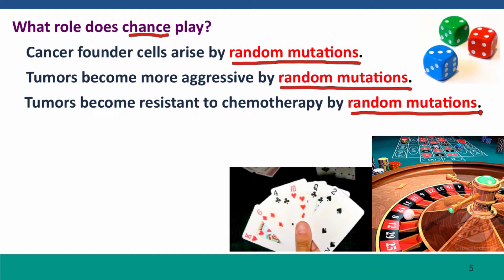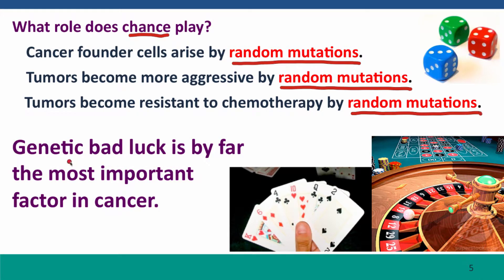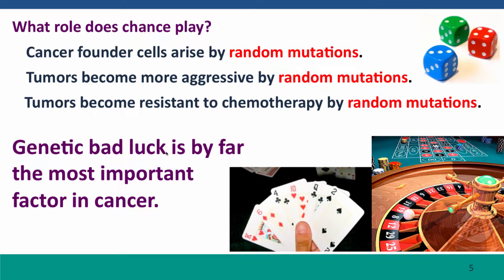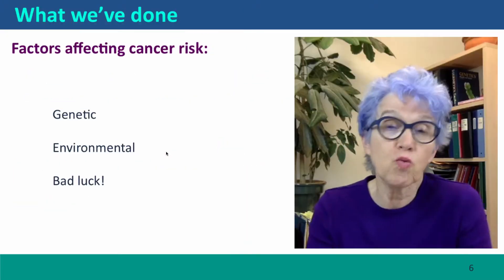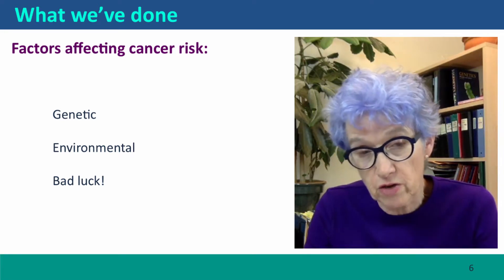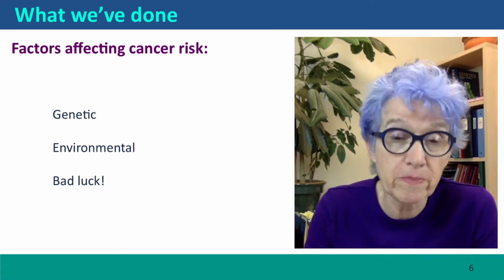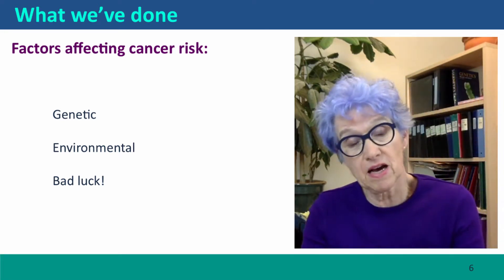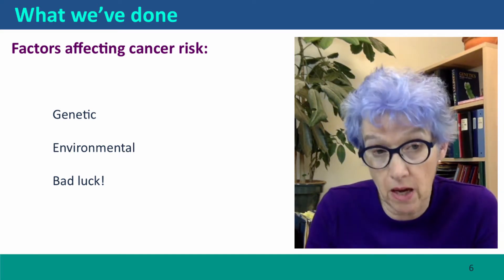So that means it's probably not worth worrying too much, once cancer has happened, about tracing the causes. Because the biggest factor in cancer is genetic bad luck. Very briefly, we've discussed genetic factors that affect cancer risk, environmental factors, and the underappreciated role of bad luck.